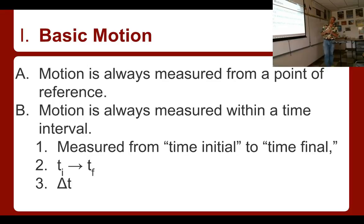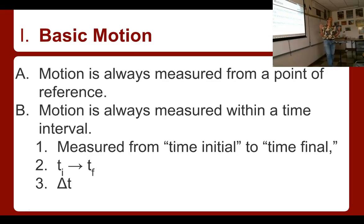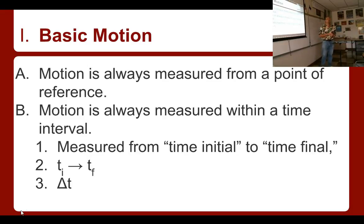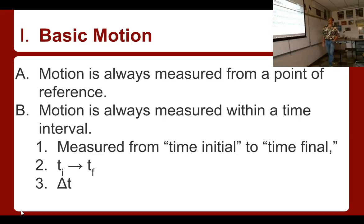Motion is always with regard to a point of reference. If you're in a car, it feels like you're not moving because the car is moving with you. But somebody standing on the sidewalk would notice you passing by and notice your motion. A flea on a dog isn't aware that the dog is moving because the skin and hair it's hanging onto is also moving — but if the flea were to jump off, it would see the dog walking away. Motion is always referenced from some fixed point.